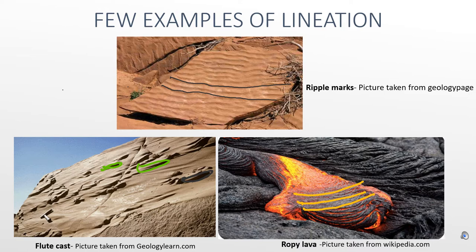The bottom left picture shows flute casts which are oriented in a way that tells us they are lineated. The third picture is of igneous rock, in which a series of linear features are being developed in a ropy lava because of the flow of lava.